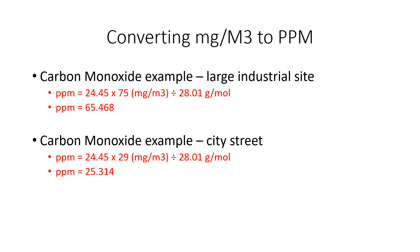Now let's look at a city street scenario. Cars, buses, and mobile sources all add to carbon monoxide levels. Using the same formula, with a reading of only 29 milligrams per meter cubed, we come back with a PPM of 25.314 for this example.